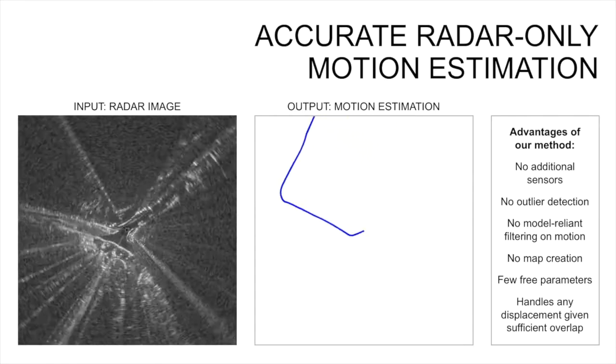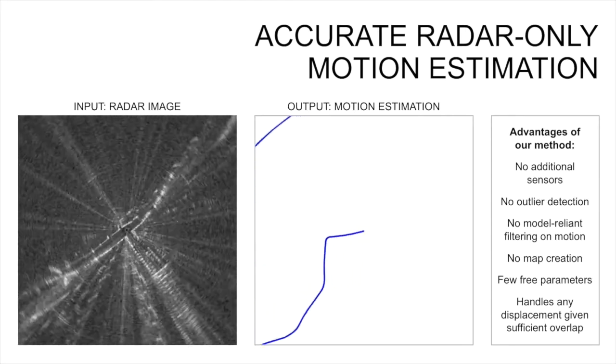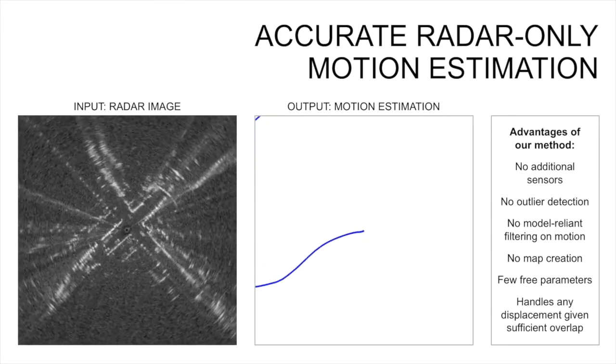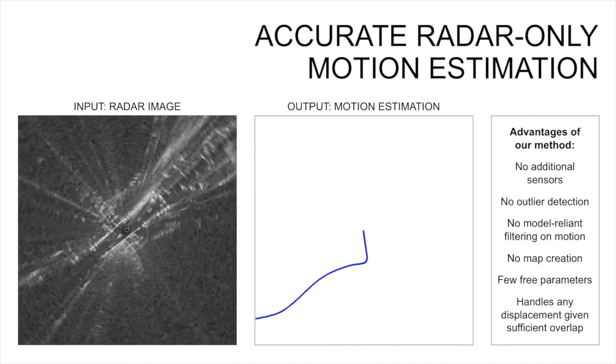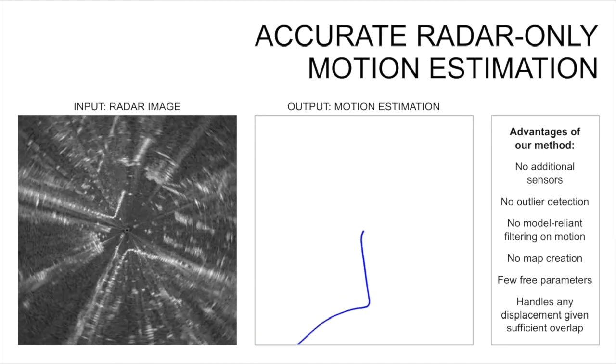Our method produces accurate radar-only motion estimation without outlier detection, model-reliant filters or maps. It has very few free parameters, all of which are intuitive to tune.